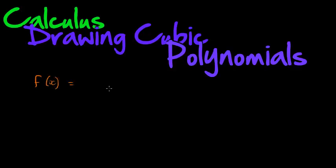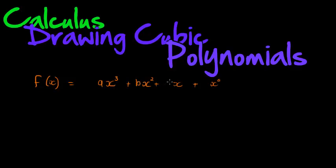A polynomial is an expression where we get different multiple terms, and these different terms have different powers for x. The cubic polynomial has 'cubic' — the highest power is 3. Written in decreasing order it would look like this, and the last term is x to the power 0, which is just 1. These have coefficients, so let's call them a, b, c, and d. That is what a cubic polynomial looks like.